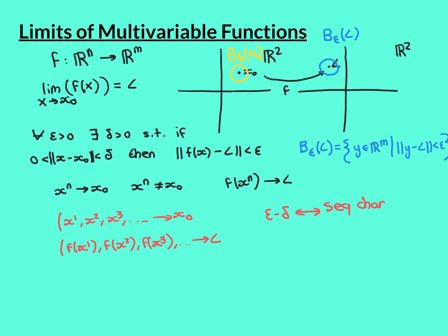We'll have a break here and in the next video I'll go over the proof of this equivalence — the arguments are exactly the same as in the single variable case, so I'll do this briefly. Note that the definition given here works fine when n and m are both 1, reducing to the single variable case: open balls in one dimension are just open intervals, and these Euclidean norms in one dimension are just the modulus function.